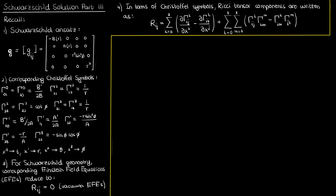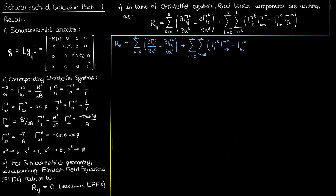Next, we'll calculate the R₁₁ component of the Ricci tensor. Plugging in i equals 1 and j equals 1, this is what our Ricci tensor formula becomes. Looking at our Christoffel symbols: the only non-zero term in the first partial derivative occurs when k equals 1. For the other partial derivative term, every term from k equals 0 to 3 is non-zero, so we have to keep everything. For the third term, the only non-zero Christoffel symbol occurs when k equals 1, and again all values of m from 0 to 3 are non-zero.